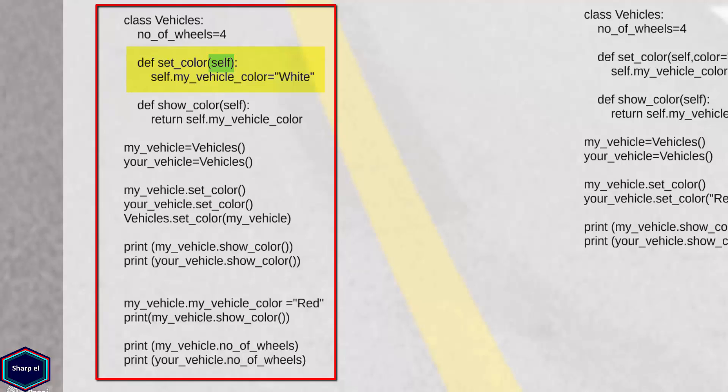I can even call setColor method by passing the object as self argument, but now there is no need to do so and we will cover this in future tutorials. Inside my method setColor, I have an instance attribute myVehicleColor which I set to white.